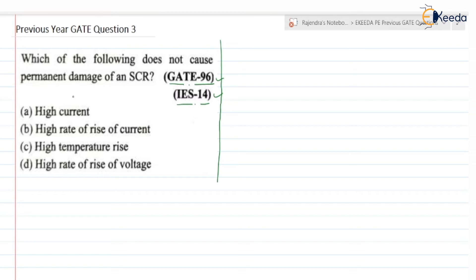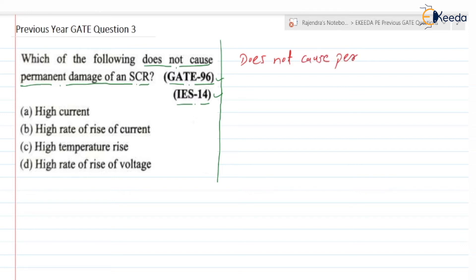Which of the following does not cause permanent damage of an SCR? Please be careful — the question asks which does NOT cause permanent damage of an SCR. They have given four options.